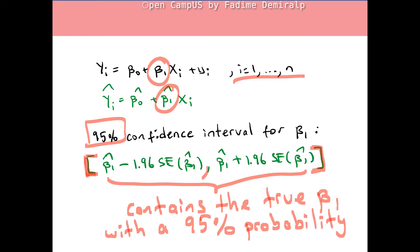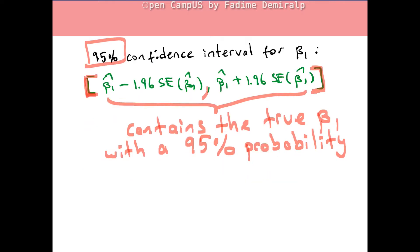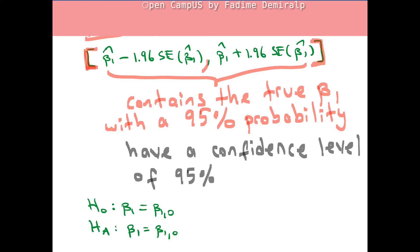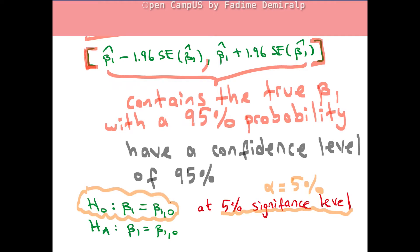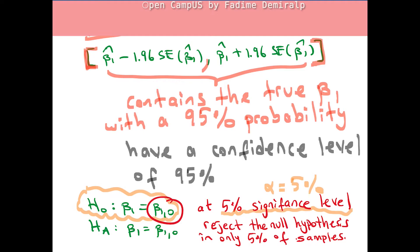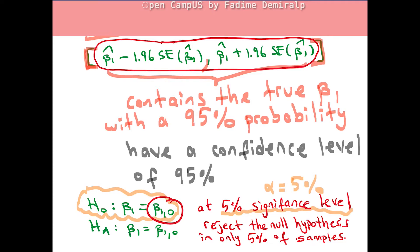In other words, say we have 1000 randomly selected samples; then 950 of these samples will contain the true value of beta 1. The interval is said to have a confidence level of 95%. In a hypothesis test at 5% significance level — when alpha is 5% — we reject the null hypothesis (the hypothesized value of true beta 1) in only 5% of all possible samples. The true value of beta 1 will not be rejected in 95% of all possible samples. When we construct a 95% confidence interval, we determine the set of all values of true beta 1 which cannot be rejected at 5% significance level.